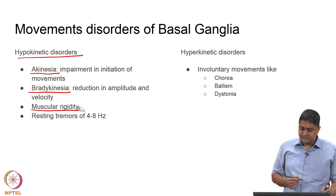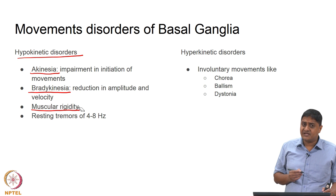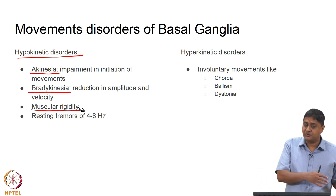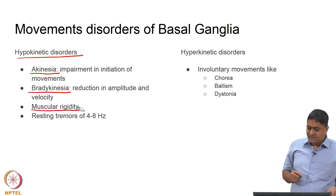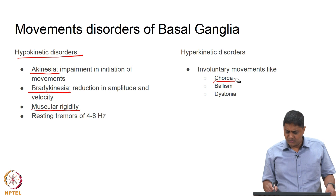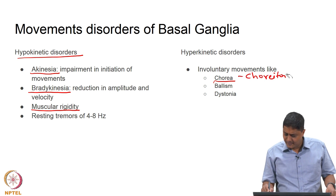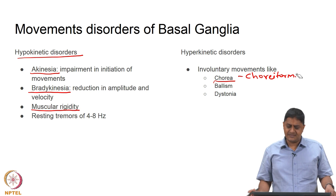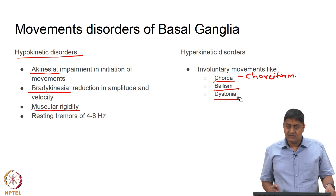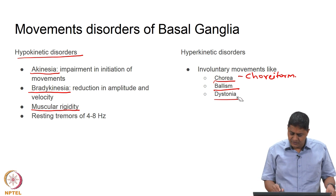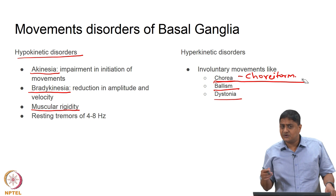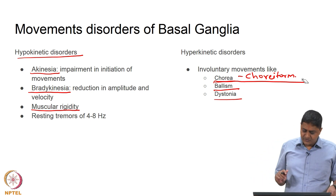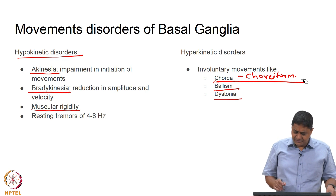In hyperkinetic disorders, the patient is producing unwanted movements. In the previous case, the patient wanted to do something and was not able to do it; in this case, the patient does not want to do something but is doing it anyway. These unwanted movements are of different types: chorea, which refers to choreiform movements, ballism, and dystonia. In this class, we will discuss Huntington's chorea specifically; in a future class we will also discuss Sydenham's chorea.